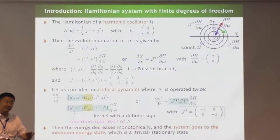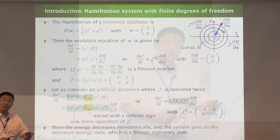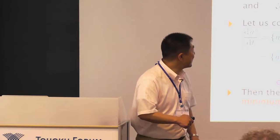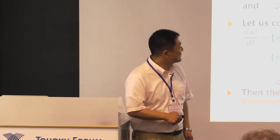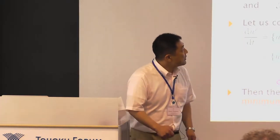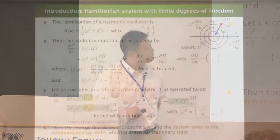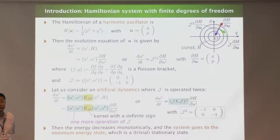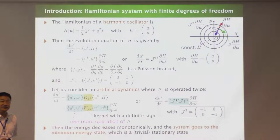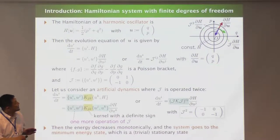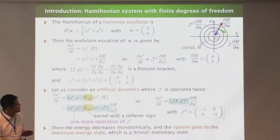We have many choices for the symmetric kernel as long as the sign is definite. We input some kernel with a definite sign, and the evolution equation is given by this. The energy of the system then monotonically changes, and the extremum of the energy gives the equilibrium of the system. We then apply this idea to the fluid system.